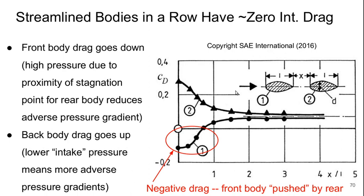So the front body drag goes down as they approach one another and eventually actually becomes negative. And this is because we have high pressure at the rear due to the proximity of the stagnation point for the back body. And this reduces the adverse pressure gradients over the surface of the first body. And eventually when they're really close together can actually cause negative drag, which basically means that the front body is being pushed along by the rear one.